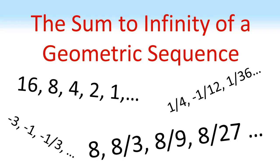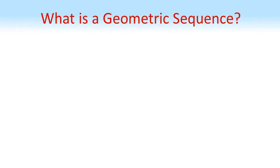The sum to infinity of a geometric sequence. A geometric sequence is a sequence of numbers where each term is found by multiplying the previous term by a set amount which we call the common ratio.